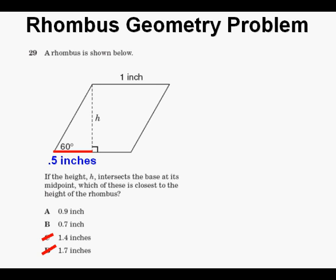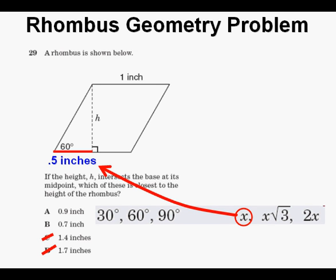Since this is a 30-60-90 triangle, we look at the formula chart again. This distance x is the short side, which is .5 inches, or one half an inch. And this distance, opposite the 60-degree angle, x square root of 3, is the height of the rhombus.